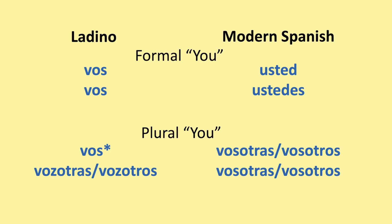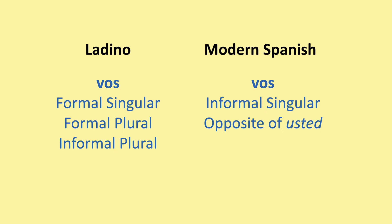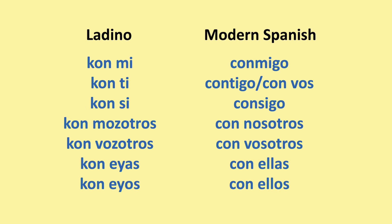Modern Spanish also has vos, but the differences are: in Ladino, vos is the formal singular, the formal plural, and the informal plural. In modern Spanish, vos is the informal singular — it's the opposite of usted. In modern Spanish, whenever you have 'with me', 'with you', 'with himself/herself', you connect the word in a special construction. So 'with me' is 'conmigo'. In Ladino this doesn't exist, so instead of 'conmigo' you say 'con me', instead of 'contigo' you say 'con ti', instead of 'consigo' you say 'con si'. The rest are the same: con mosotros, con vosotros, con ellas, con ellos.